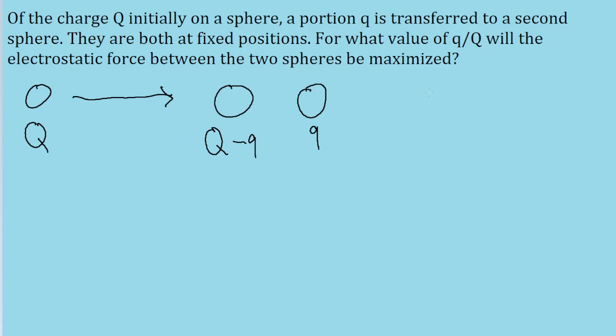And the rest of the problem asks about maximizing the electrostatic force between them. Now recall that the Coulomb force, Coulomb's law, tells us that the electrostatic force between two charged particles is equal to the Coulomb constant K multiplied by the product of their charges divided by the square of the distance between them.